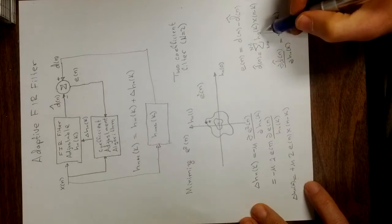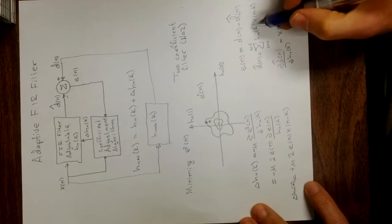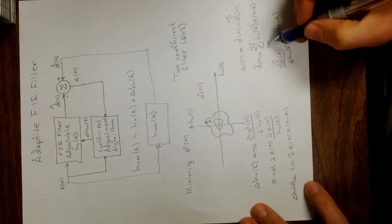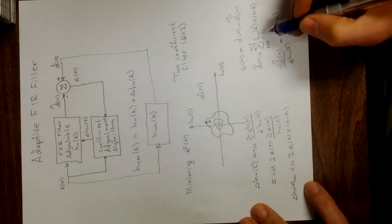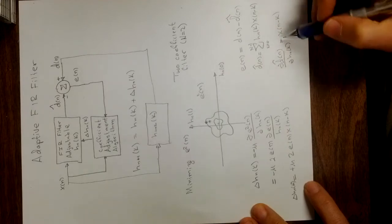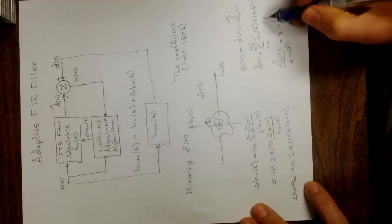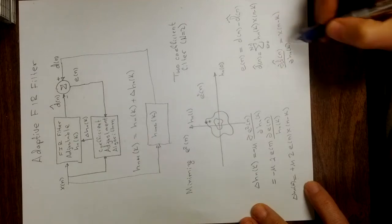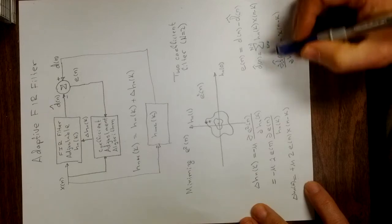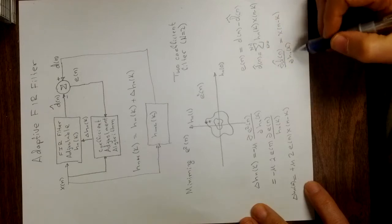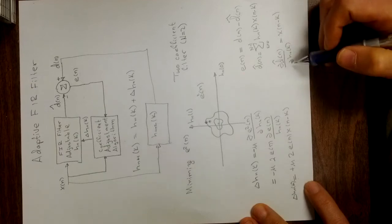When I plug in h n of 0, I actually get an h n of 0 times something there. But all the other terms, there's no h n of 0 in all the other terms. So you only get one term when you take the derivative with respect to the k-th h n, and that's x of n minus k. So the derivative of d n hat with respect to h n of k is x of n minus k.